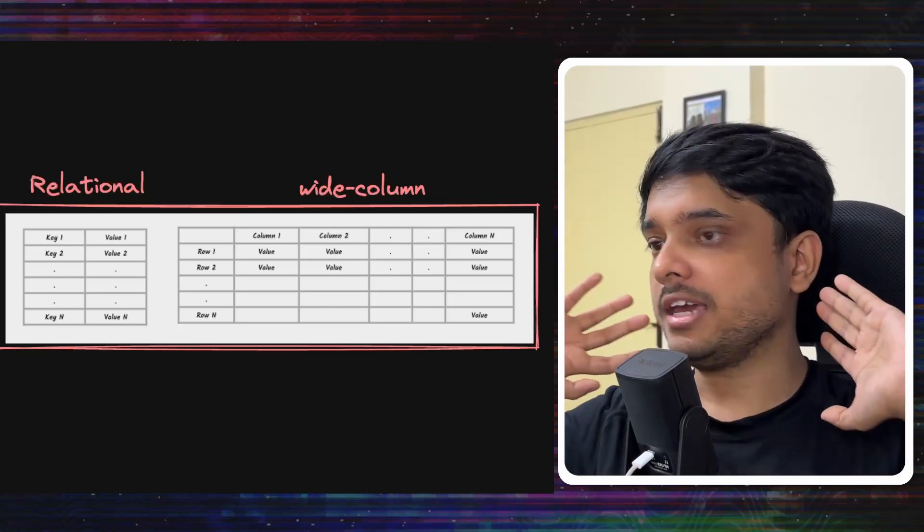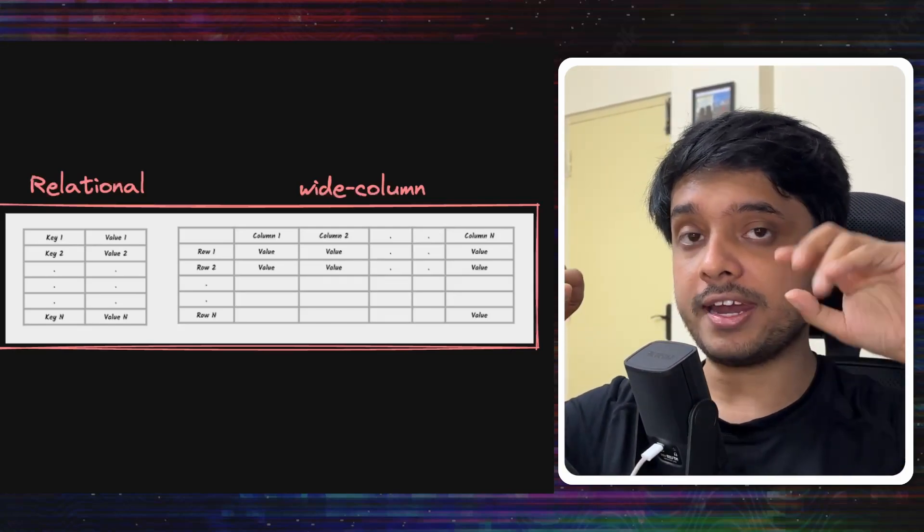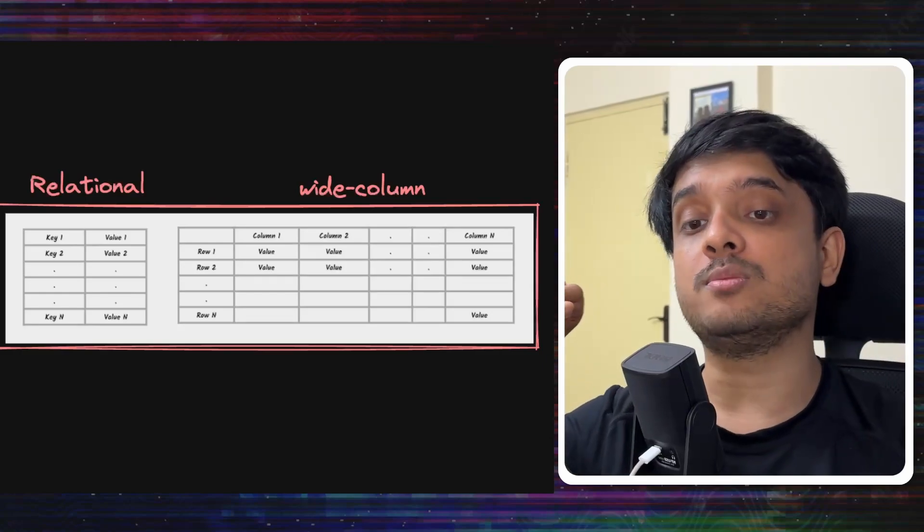In a relational database every row must have the same set of columns but that's not the case here. Every row can have its own set of columns. So if row 1 has the columns name and speed score, row 2 can have the columns name and similarity score.